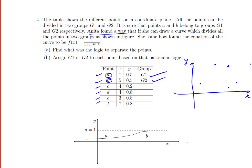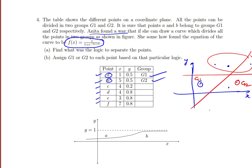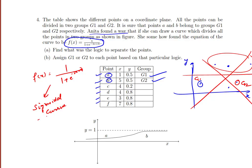Anita found a function and based on that categorized the points into G1 and G2. A is G1 and B is G2. To categorize them, there are multiple ways to find a separating line. But what she has done is applied some logic and found that the function f(x) = 1 / (1 + e^(−2x + 9)). Applying this gives a sigmoidal curve whose maximum limit is 1.